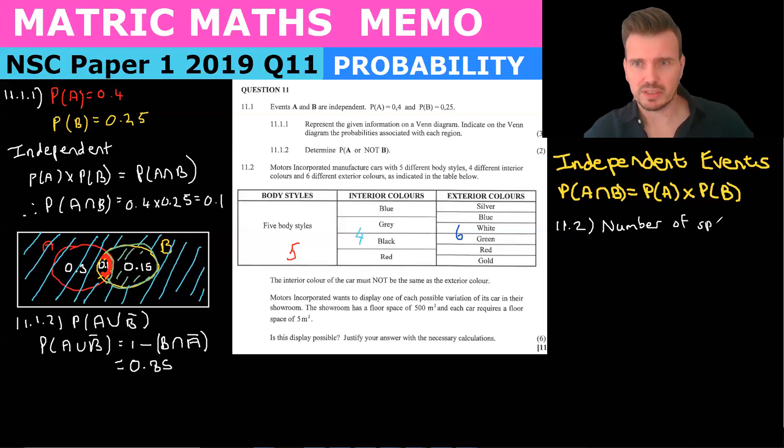So let's see. The number of spaces on the floor is 500 meters squared divided by 5 meters squared, so that's going to be a hundred. So therefore I know that for the display to be possible, my variants must be less than or equal to 100. So let's look at the possible variants.